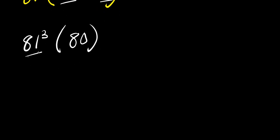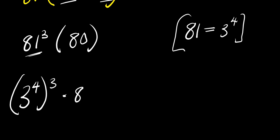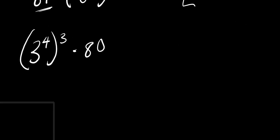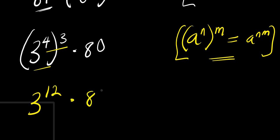So from here we need to find the value of eighty-one to the power of three times eighty. Remember, eighty-one equals three to the power of four, as we established earlier. So we have three to the power of four, raised to the power of three, times eighty. Applying the identity a to the power of n raised to the power of m equals a to the power of n times m, we get three to the power of twelve times eighty.